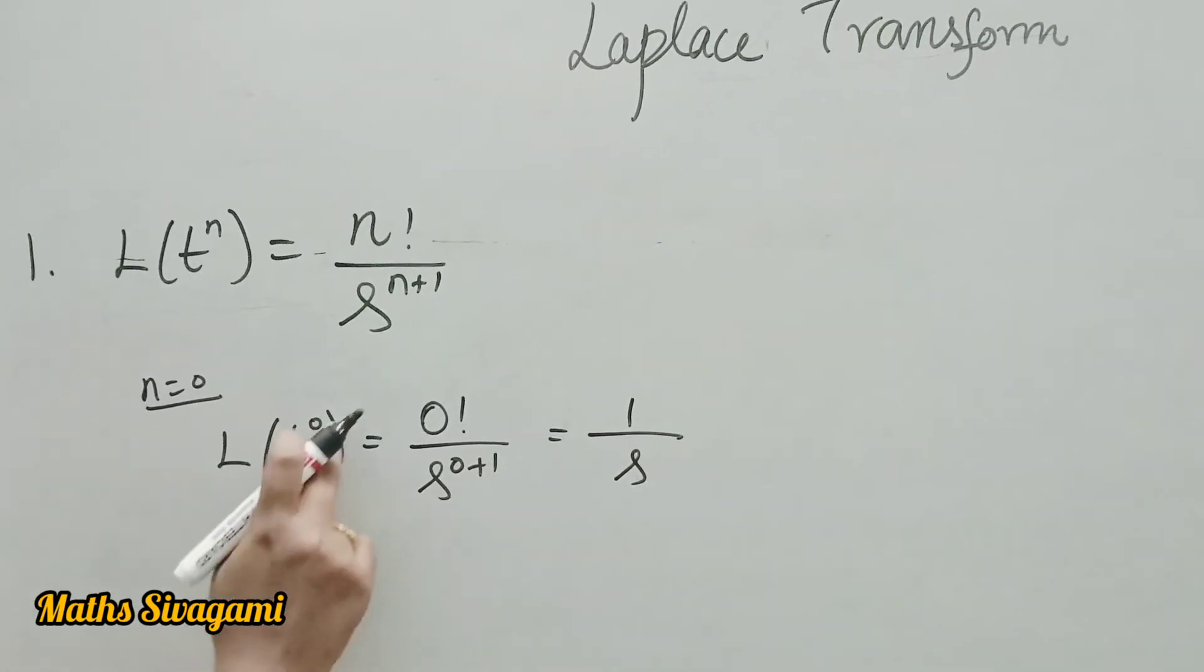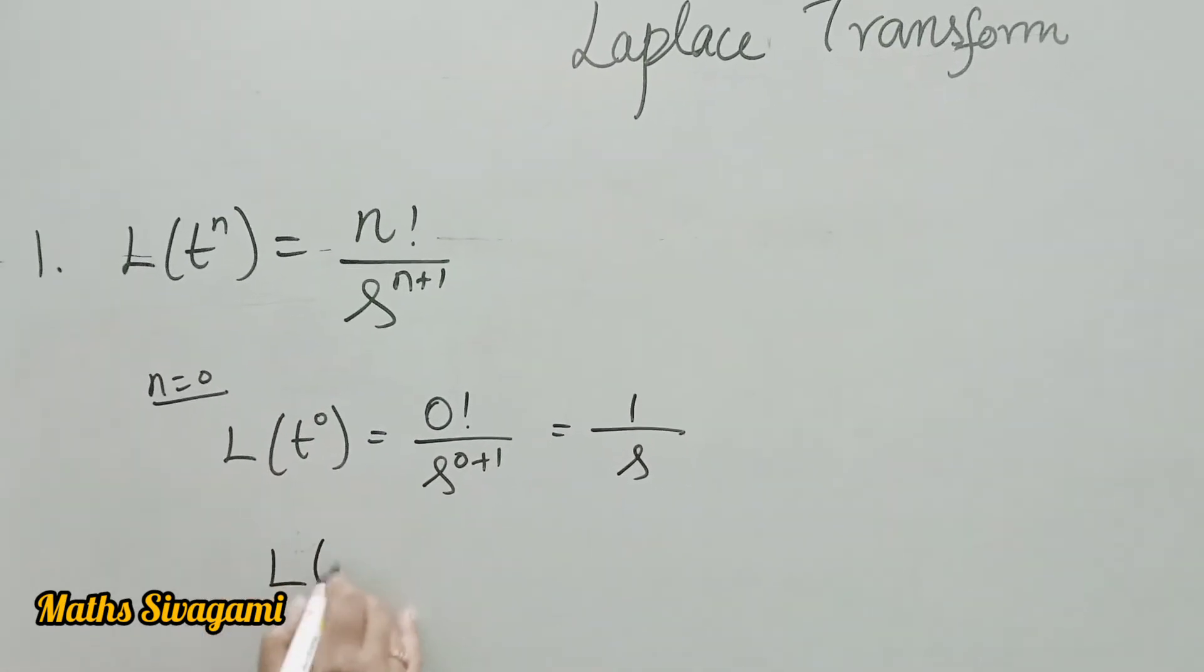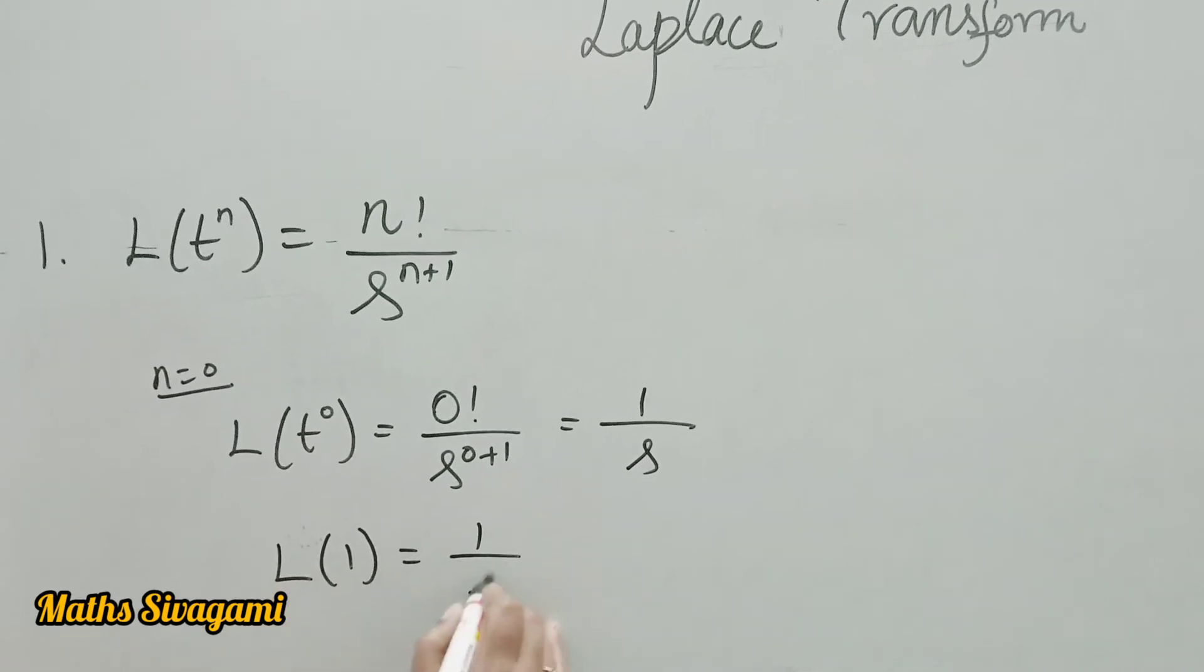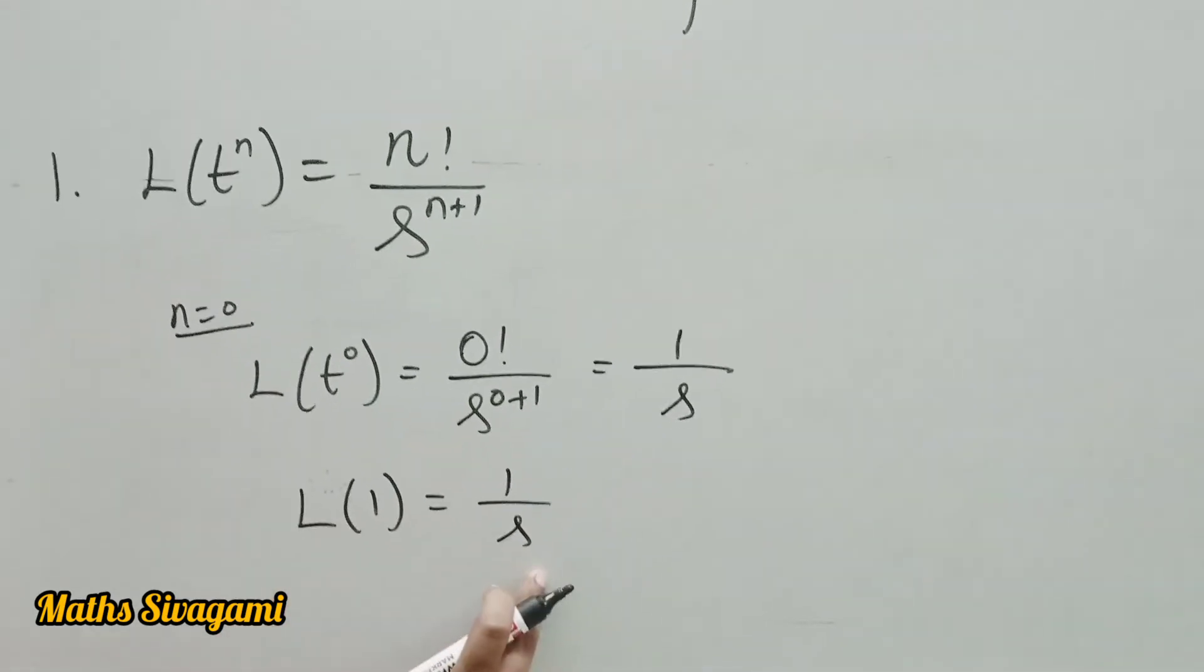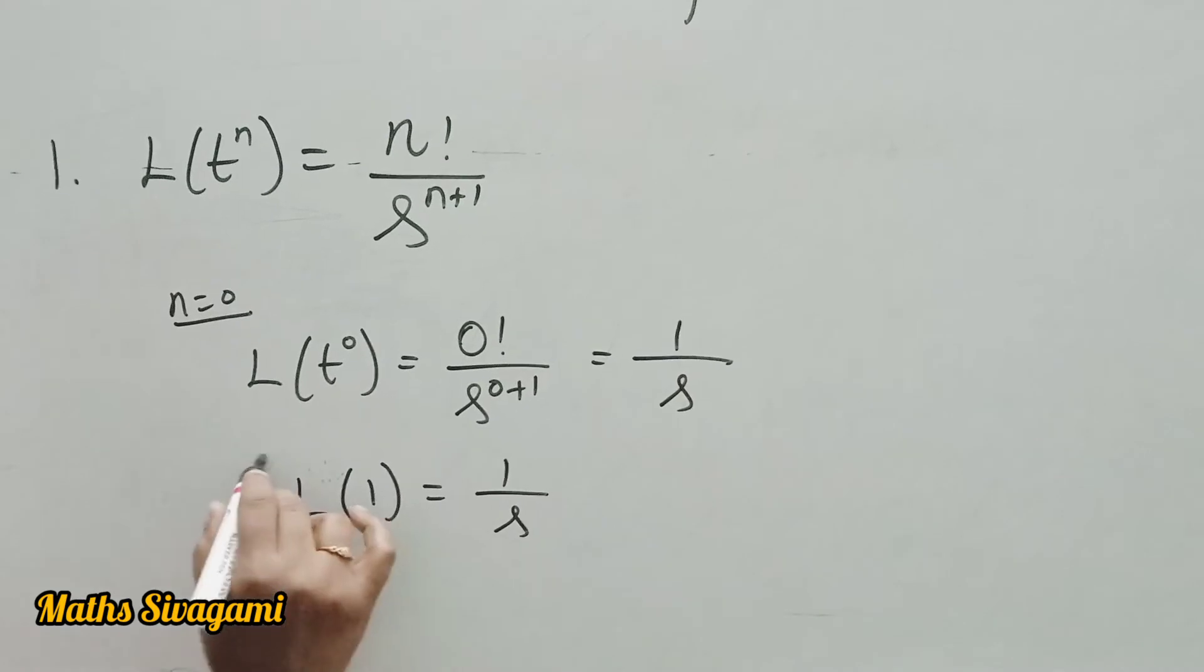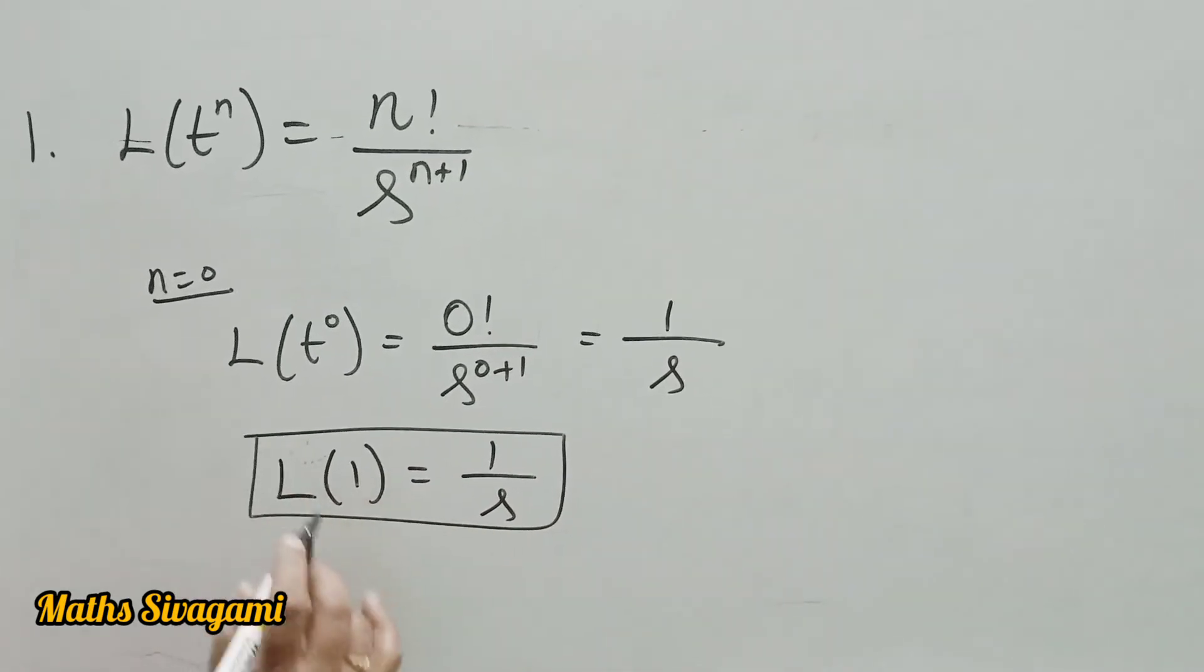t power 0, that is anything power 0, is 1. So L of 1, that is Laplace of 1, equals 1 by s. This is the formula: Laplace of 1 is 1 by s.